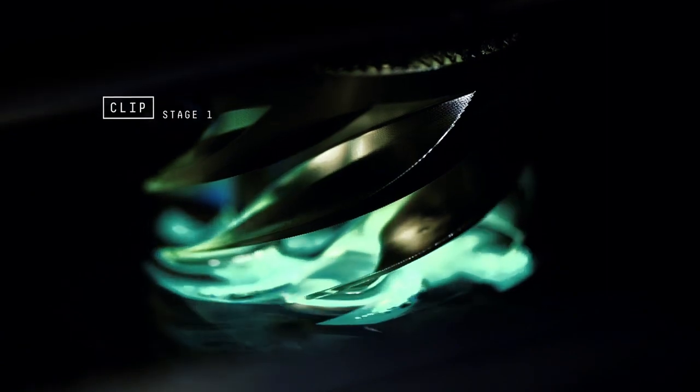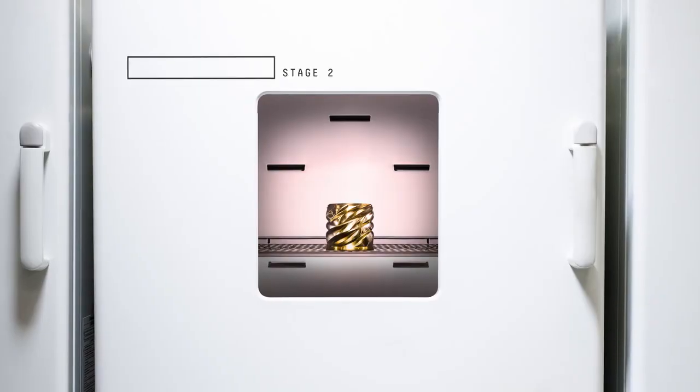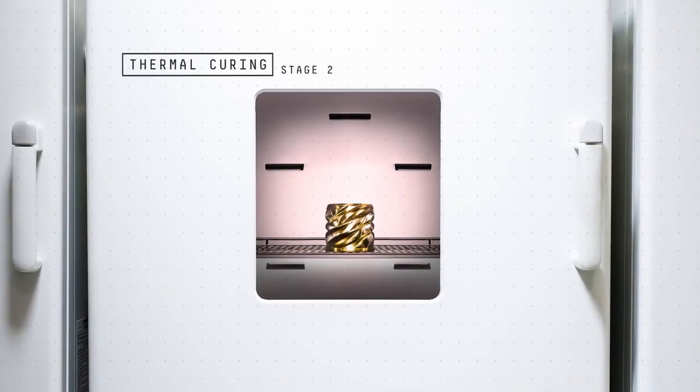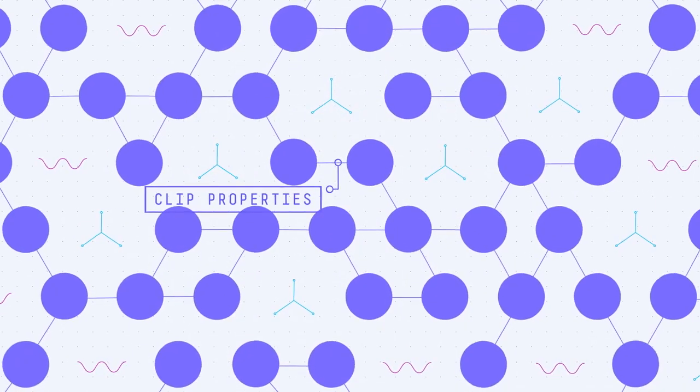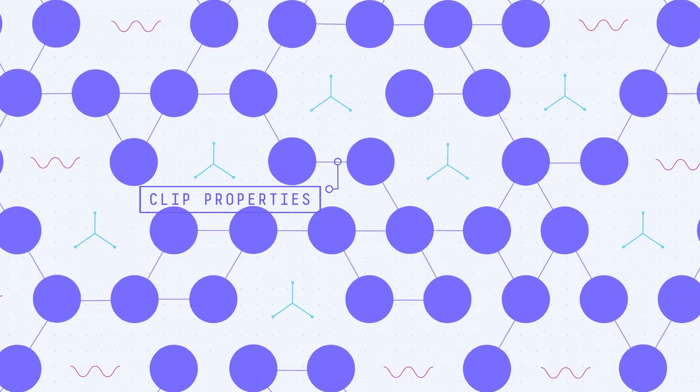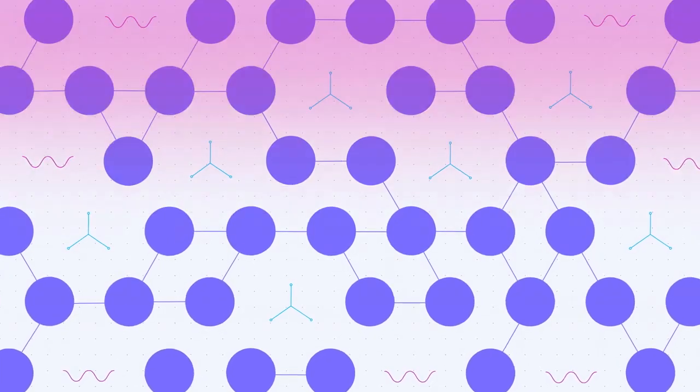Simply printing with Carbon's hardware alone does not allow for end-use properties with real-world application. Once the light has shaped the part, a second programmable curing process achieves the desired mechanical properties by baking the part in a thermal bath or oven.